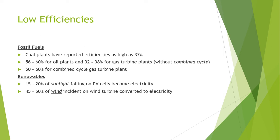With the combined cycle, gas turbine plants reach 50 to 60 percent efficiency. The efficiency rate is significantly improved with the use of the combined cycle in coal power plants and also in oil and gas turbine plants.